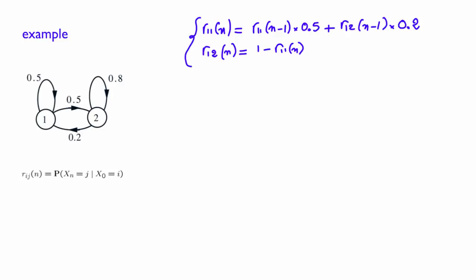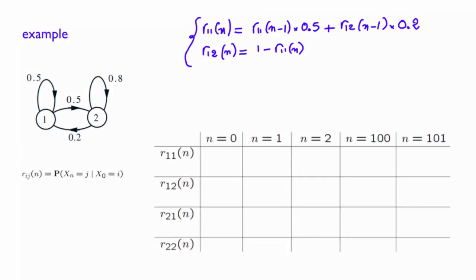And this system of two recursions is enough to propagate r11 of n and r12 of n as a function of n. Let us do it and fill the blanks here.